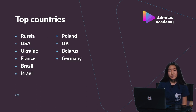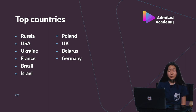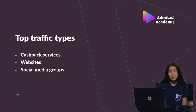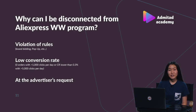If you have the opportunity to attract traffic from different regions, here is the list of top countries. Buyers from these countries purchase something on AliExpress more than anyone else. These countries include Russia, the US, Ukraine, France, Brazil, Israel, Poland, UK, Belarus, and Germany. Top types of traffic that can help you earn with AliExpress program are cashback services, websites, and social media groups. What do you need to keep in mind to have a long and successful cooperation with AliExpress program?